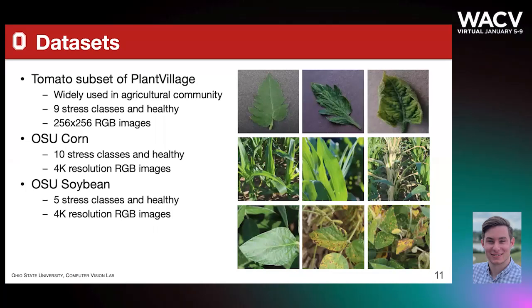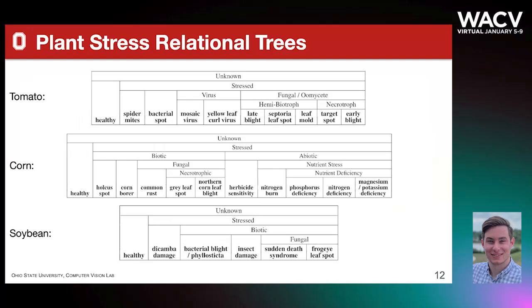We employ three datasets. The first is the tomato classes subset of the Plant Village dataset, with the corn and soybean datasets coming from Ohio State. The datasets have varying numbers of classes, which impacts the size of the semantic trees we created. These semantic trees were created by our agricultural engineering collaborators to determine how the flat labels of the datasets can come together in a meaningful way. This is one organization where the tree is application-driven and each node provides useful information for the management of some stress. Other organizations could also be explored, which we leave as future work.